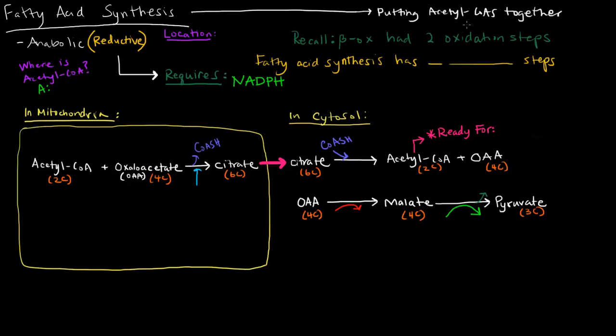So where is acetyl-CoA normally located? It's normally located in the mitochondrial matrix, where pyruvate is converted to acetyl-CoA via the pyruvate dehydrogenase complex. But where does fatty acid synthesis occur? It actually occurs in the cytosol.